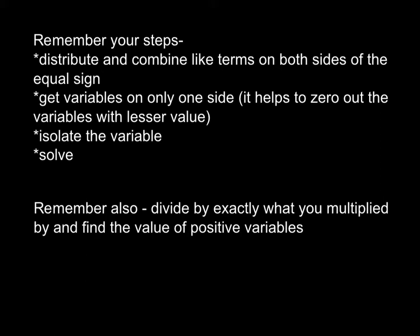First, you're going to distribute and combine like terms on both sides of the equal sign. You're not going to distribute or combine like terms when they're on either side of the equal sign. So if you have 2x on one side and 4x on the other, you cannot combine those.